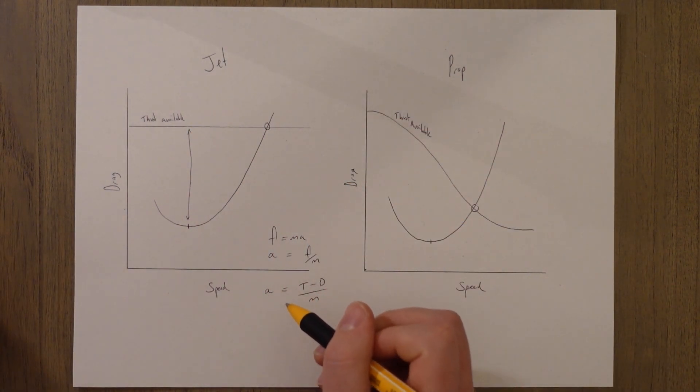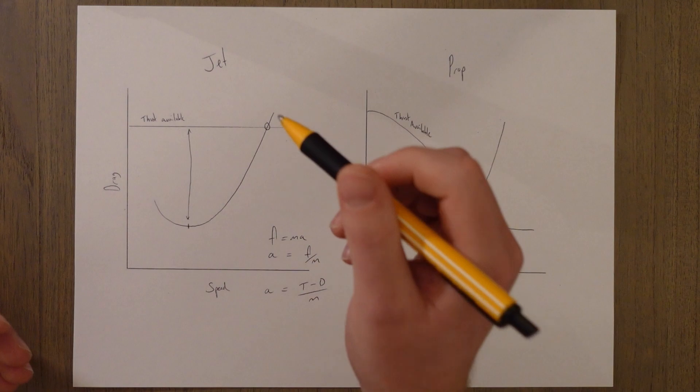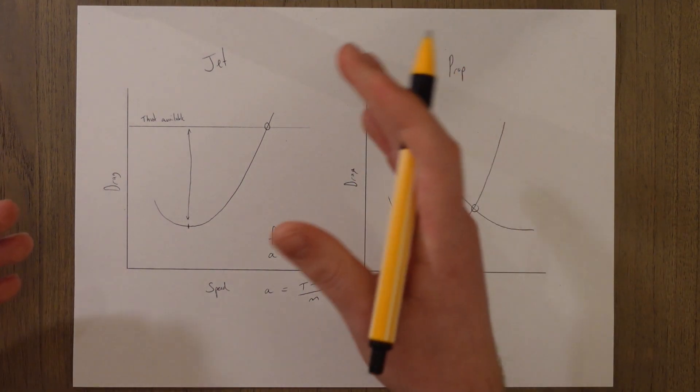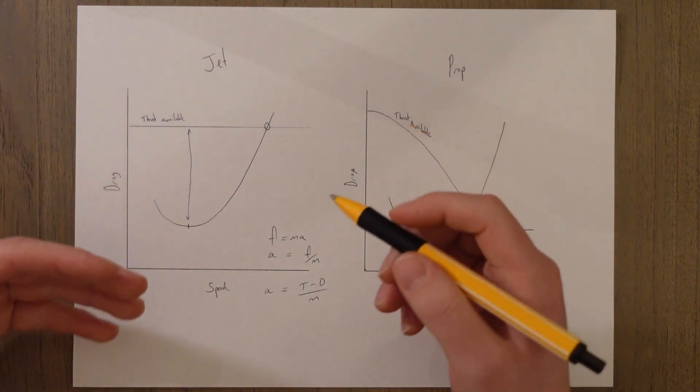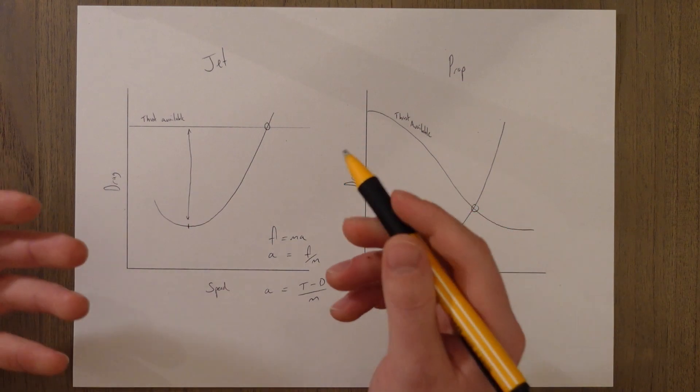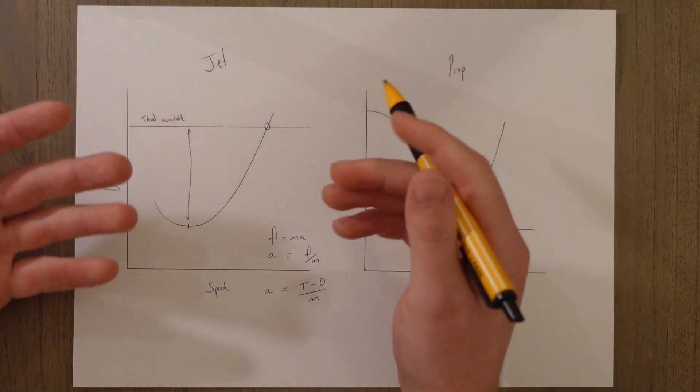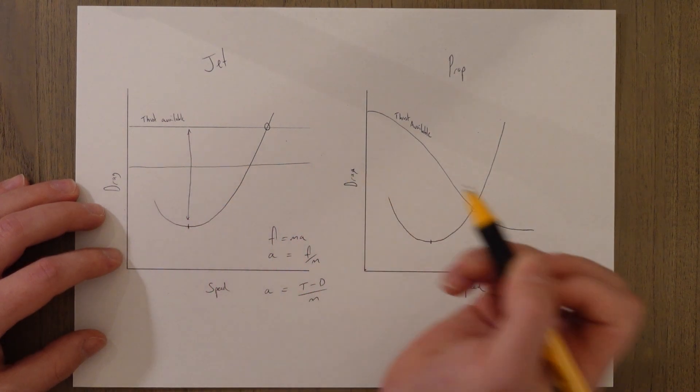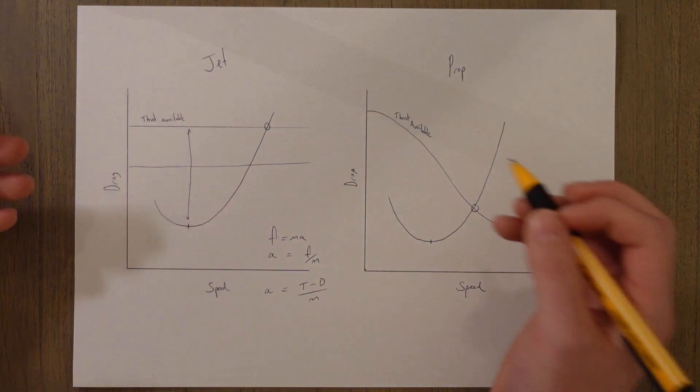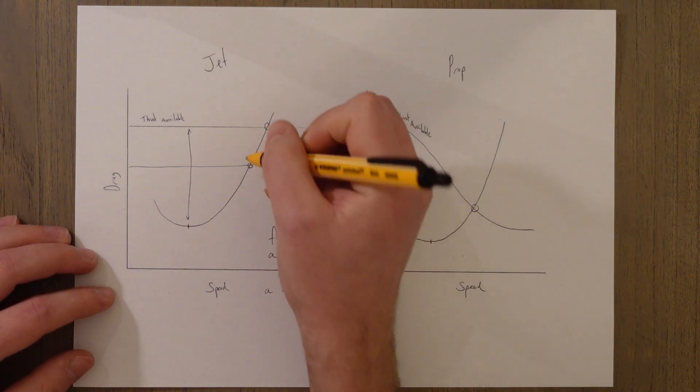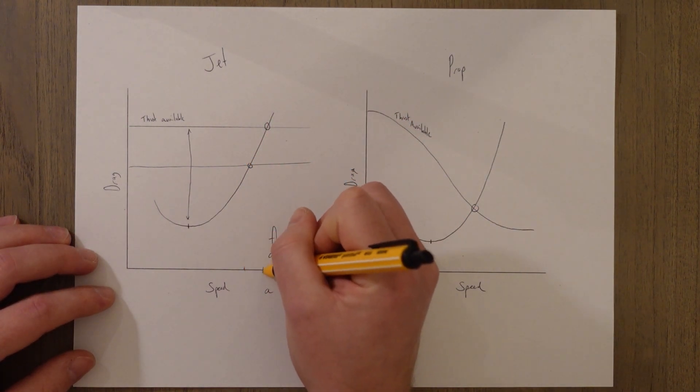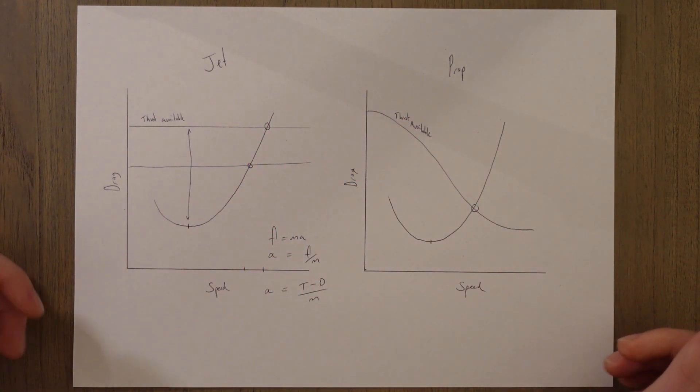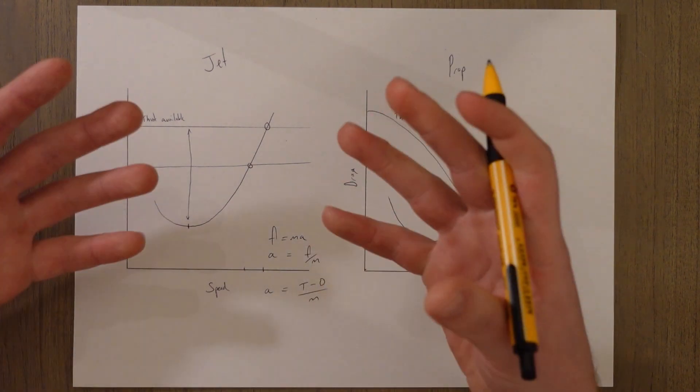Anything that influences our thrust available line will have an impact on the maximum speed. Say for example we're high up at altitude then we would have less thrust available and that means that our crossover point is lower and that's obviously a slower maximum speed, which makes sense. Less thrust, you're not going to go as fast.